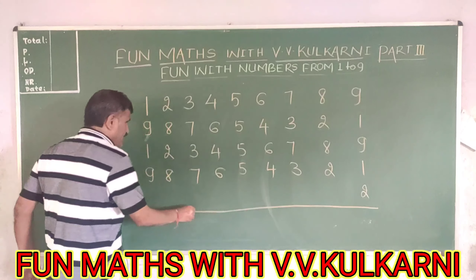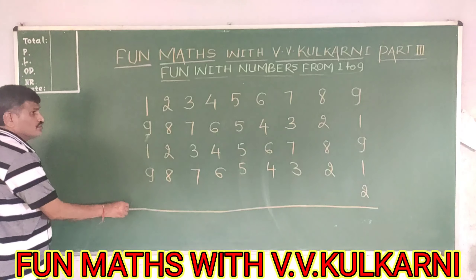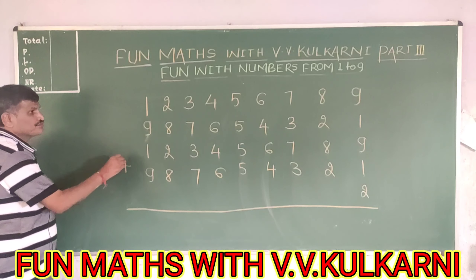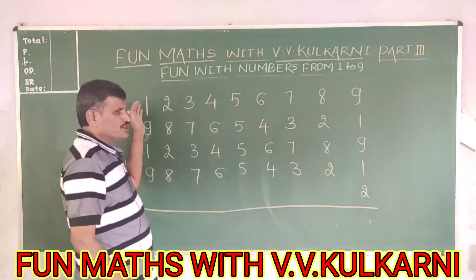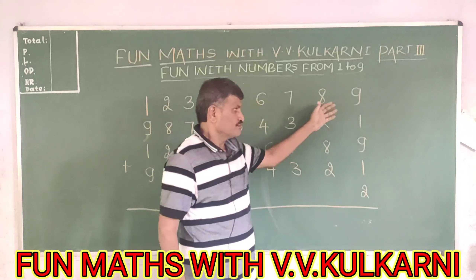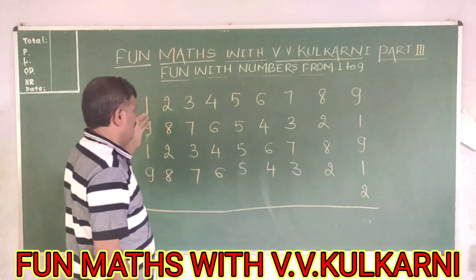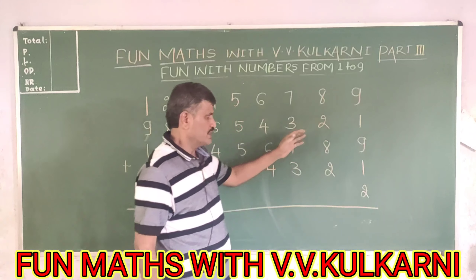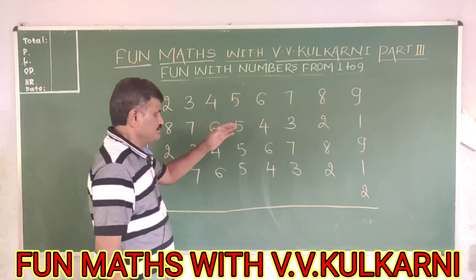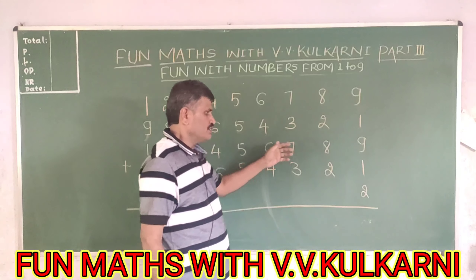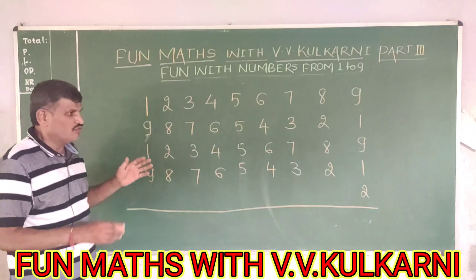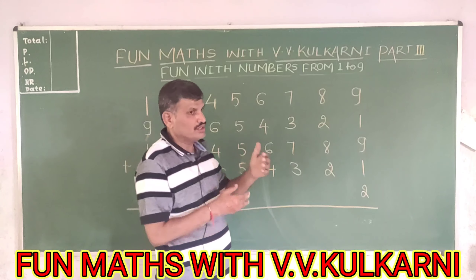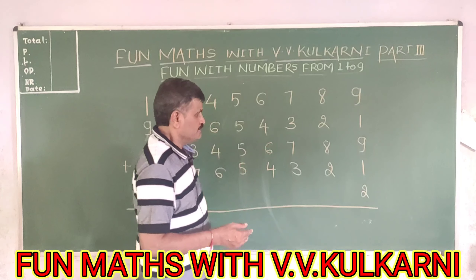And let us add and see what is the funny thing that we are going to get. What I have done is I have written the numbers from 1 to 9, then again in reverse order, once again from 1 to 9, and then again in reverse order. Now what do you think? What is the funny thing that we are going to get today? Let us see.